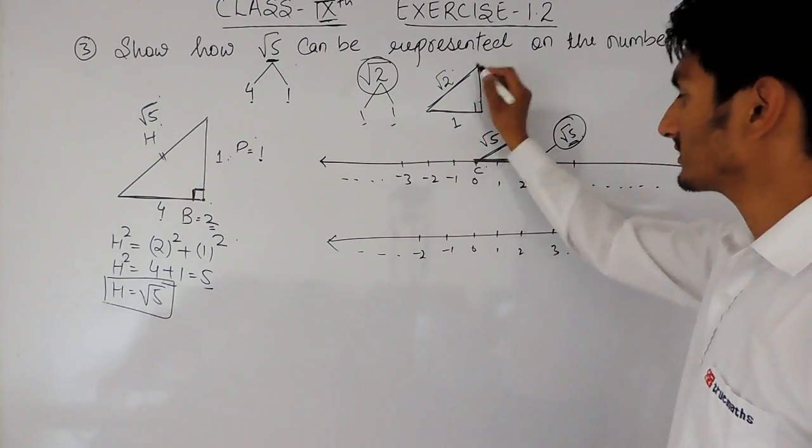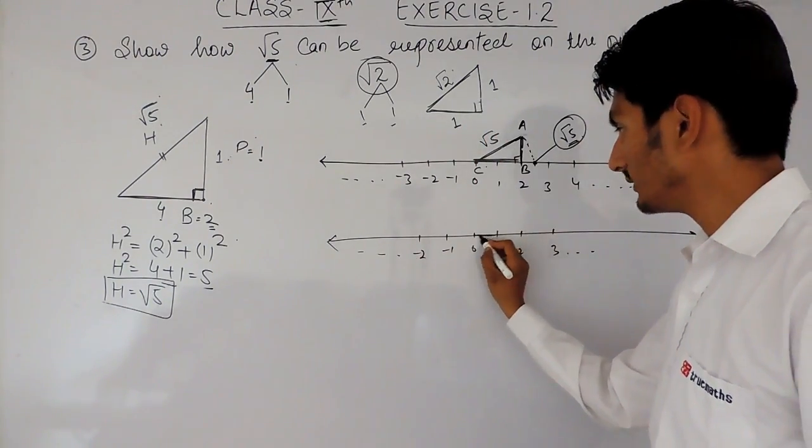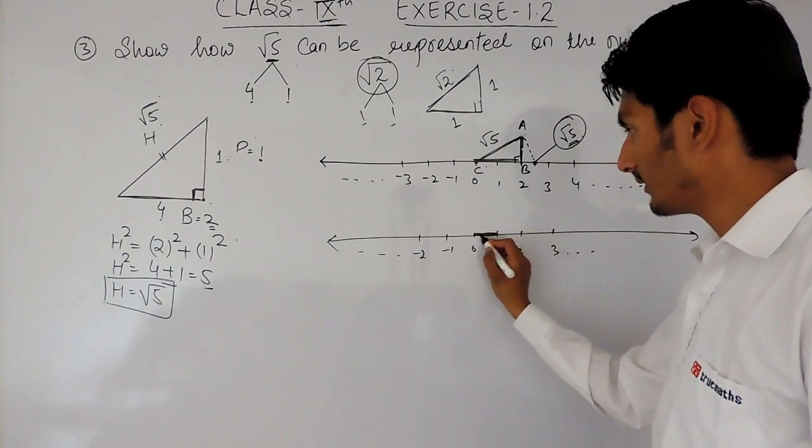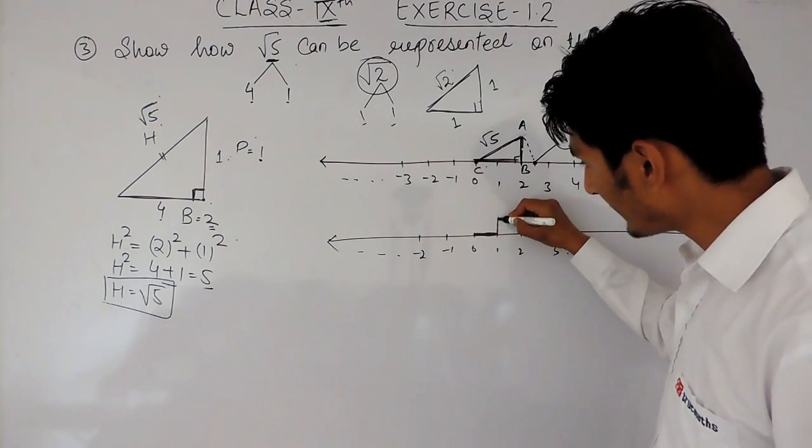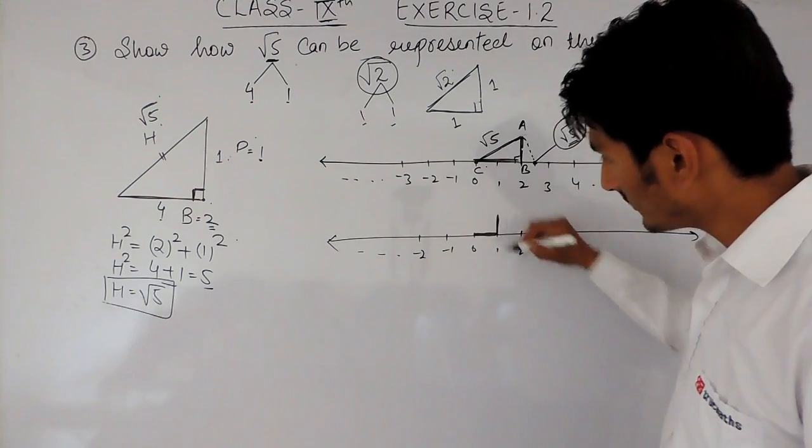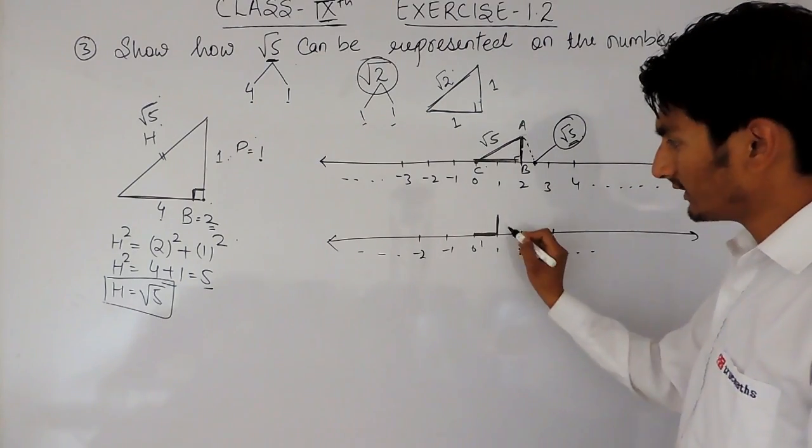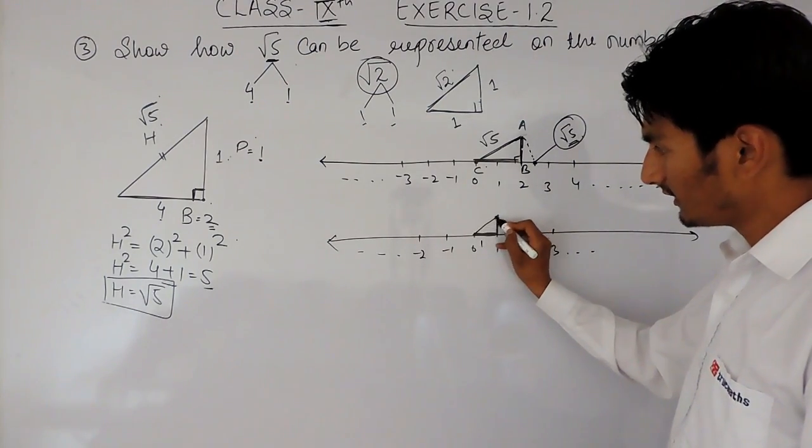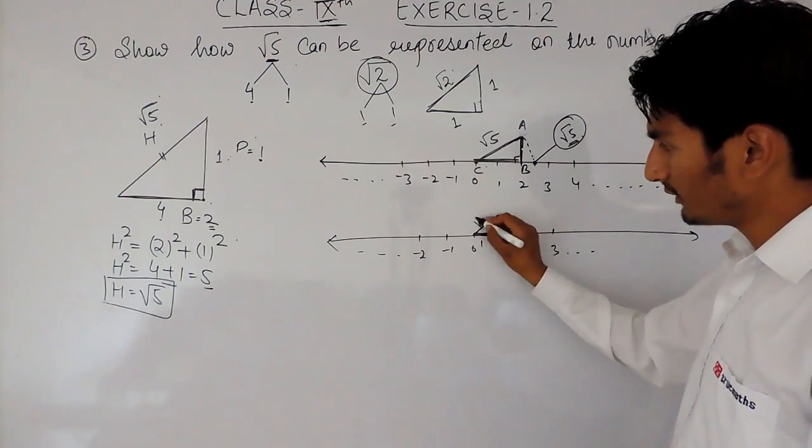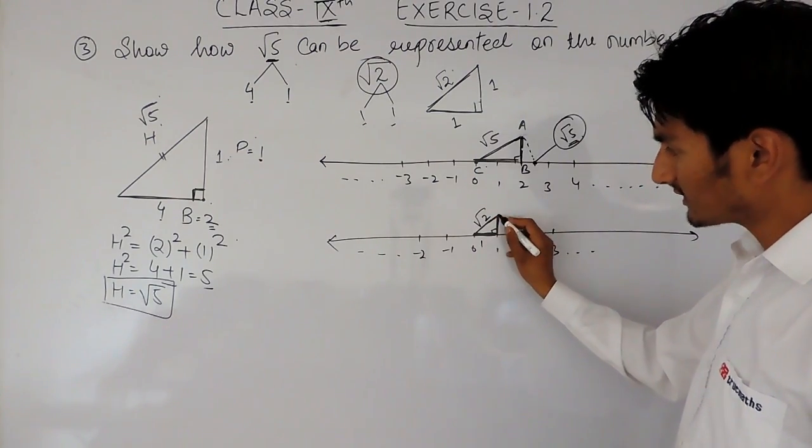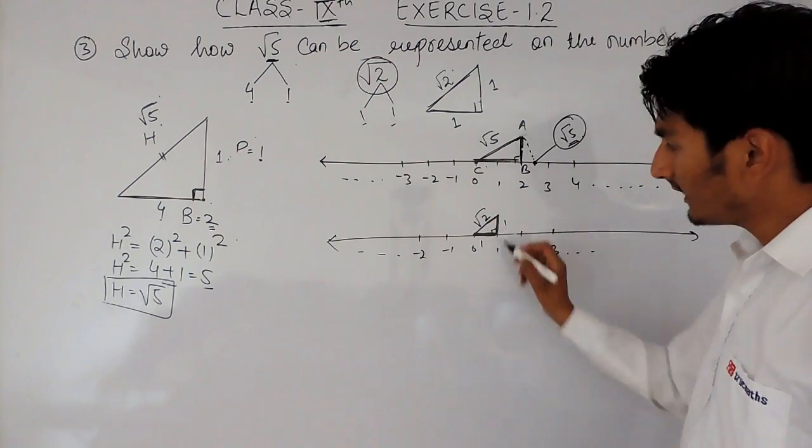Now, this is 1, this is 1. So, if I consider this as 1, and again, this length as 1, obviously, this length and this length will be same. Now, if this is 1, this is 1, obviously, this will be root 2, because this is the perpendicular ground here. Now,